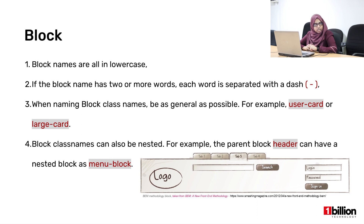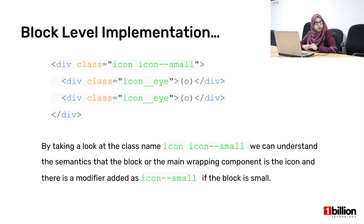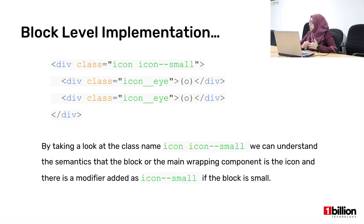Your block name can have two or more words, but if you want to give more than one word you have to separate it with a dash — for example, 'user-card' is two words separated with a dash. We can also have nested block class names. The concept is you have the header as a block, and within that header you have the menu block. So you can name these separately, and through the name itself you can understand it's a main div. You can also add a modifier to your block — for example, to make the block smaller on hover, you give the modifier 'small' with two hyphens.